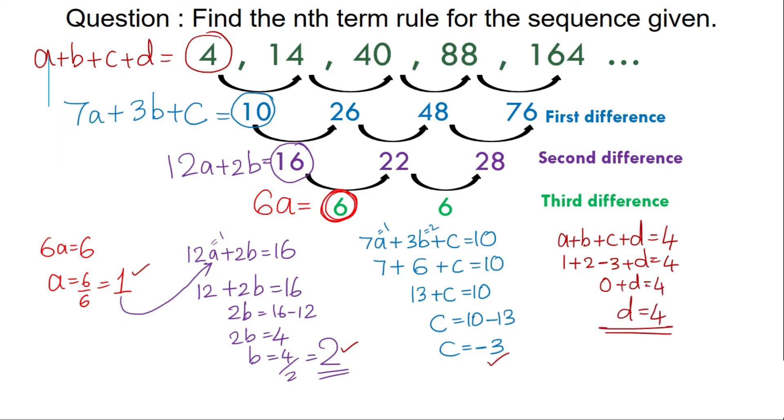I have the values for a, b, c, and d. I know the general form of this should be an³ plus bn² plus cn plus d. So just substitute the values. My final answer will be n³ plus 2n² minus 3n plus 4. So this is my nth term rule for this cubic sequence.